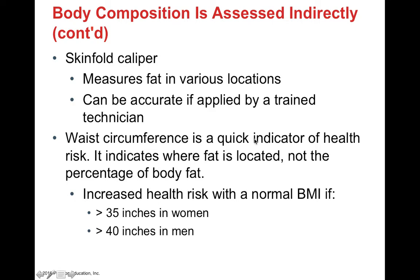Last but not least, we have waist circumference as an indicator of health risk, as well as skinfold calipers that can measure fat at various locations by pinching the back of your arm or the side of your belly. Waist circumference indicates where fat is located but doesn't tell you the percentage of body fat — a pear shape versus an apple shape may have the same extra weight but distributed differently. However, waist circumference is associated with a health risk if it's over 35 inches in women or over 40 inches in men.